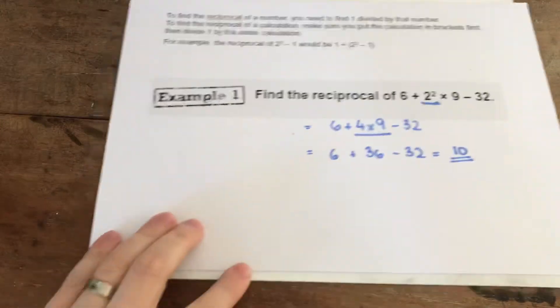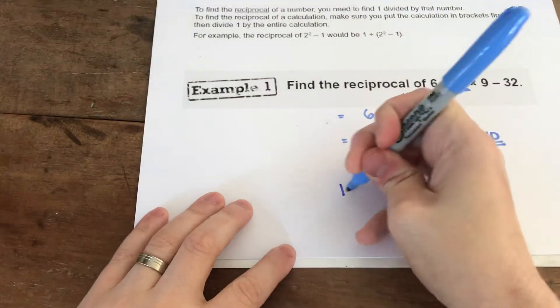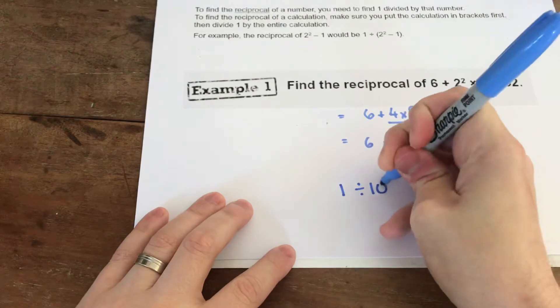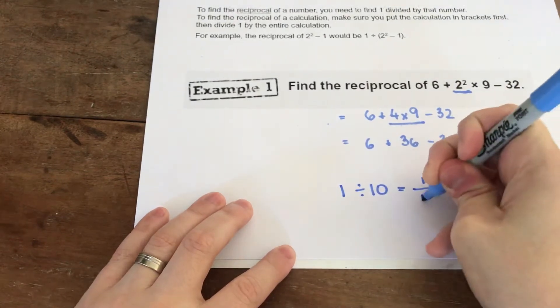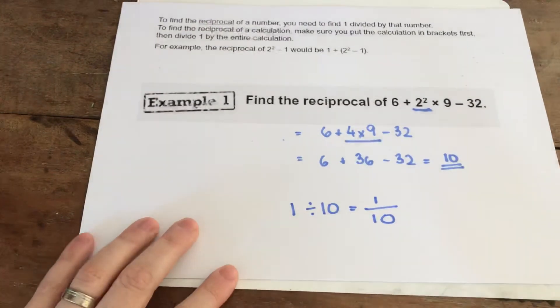It then says write this as a reciprocal. So you go 1 divided by 10, and you write that as a fraction, like that.